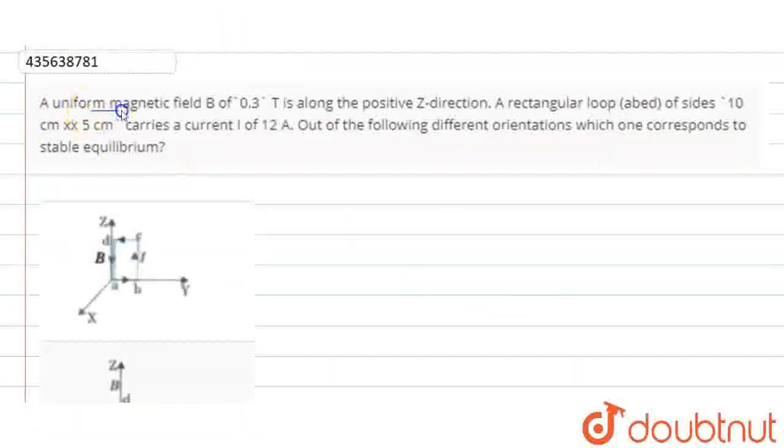We have a question: A uniform magnetic field B of 0.3 Tesla is along the positive Z direction. A rectangular loop ABCD of sides 10 cm by 5 cm carries a current I of 12 Ampere. Out of the following different orientations, which one corresponds to stable equilibrium?